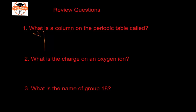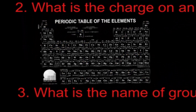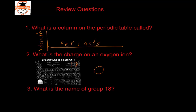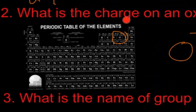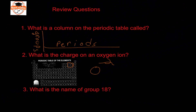Columns are called groups and rows are called periods. For the charge on an oxygen ion, oxygen is two spaces away from having a full row, so oxygen will make a negative-two charge. For group 18, those elements all have a full valence shell and are called the noble gases because they are unreactive.